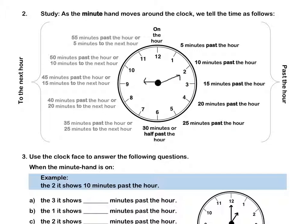If it's on the 4, it means 20 minutes past the hour. If it's on the 5, 25 minutes past the hour. And when it gets to the 6, it means that it is half past the hour or 30 minutes past the hour.